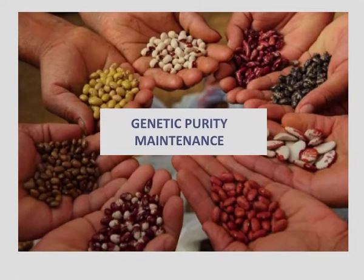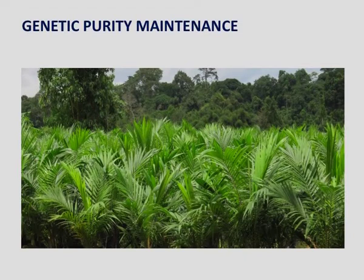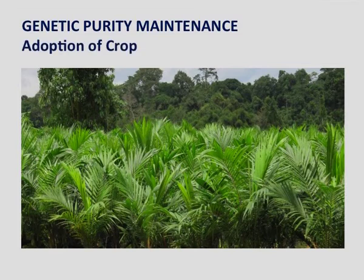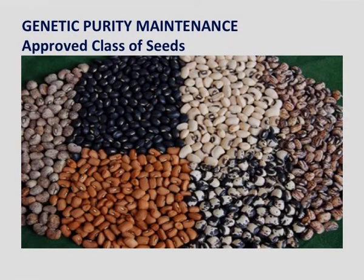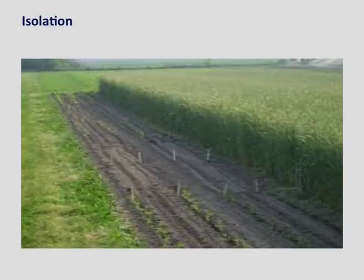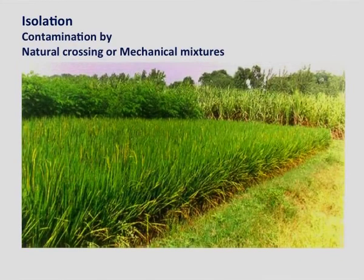Several measures have been suggested to safeguard genetic purity. The first is adoption of crop: growing crops only in areas of their adaptation to avoid genetic shifts. Next is use of approved class of seeds: only approved class of seeds in seed multiplication adopting the generation system should be used. Next is the preceding crop requirement: inspection and approval of seed plots prior to planting must be carried out. Next is isolation of seed crops from various sources of contamination by natural crossing or mechanical admixtures, which is very essential.